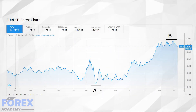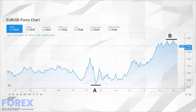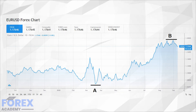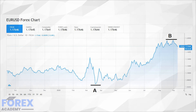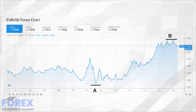If we now turn our attention to the EUR/USD pair, we can see that at position A, at the height of the pandemic in Europe, the currency pair was trading at 1.0600, before moving to a recent high of 1.1936 and falling lower to its current level of 1.1760 at the time of writing.